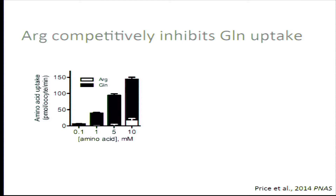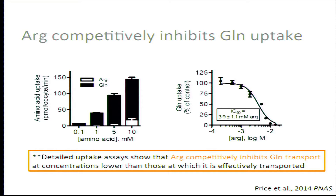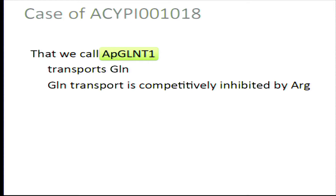It turns out that arginine isn't actually transported by this transporter. In experiments with labeled glutamine and labeled arginine across the concentration gradient, measurable arginine transport only appears at 5–10 mM. The IC50 for inhibition of glutamine transport by arginine is 3.9 mM. With several more experiments, it turns out arginine is a competitive inhibitor of glutamine transport at concentrations much lower than those at which it is itself transported. We call this transporter APGLNT1 — the Acyrthosiphon pisum glutamine transporter 1.